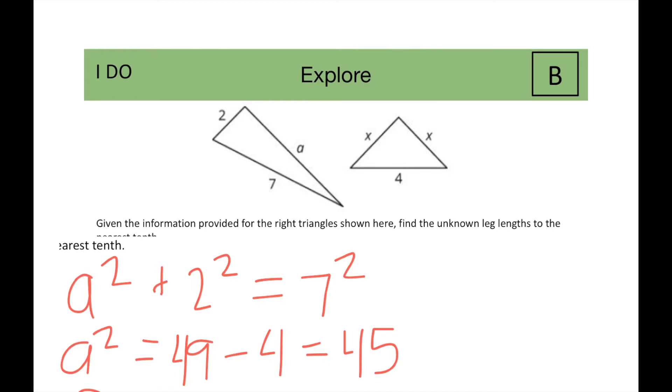For the second triangle, X squared plus X squared equals four squared, which means two X squared is equal to sixteen, which means that X squared is equal to eight, and when you do the square root on both sides, X is equal to the square root of eight.